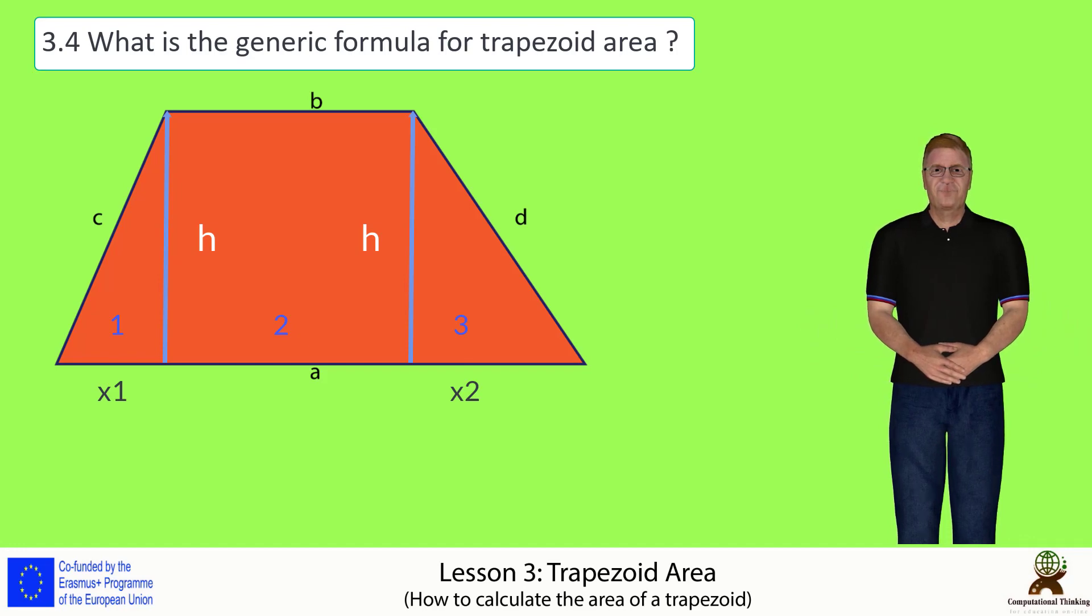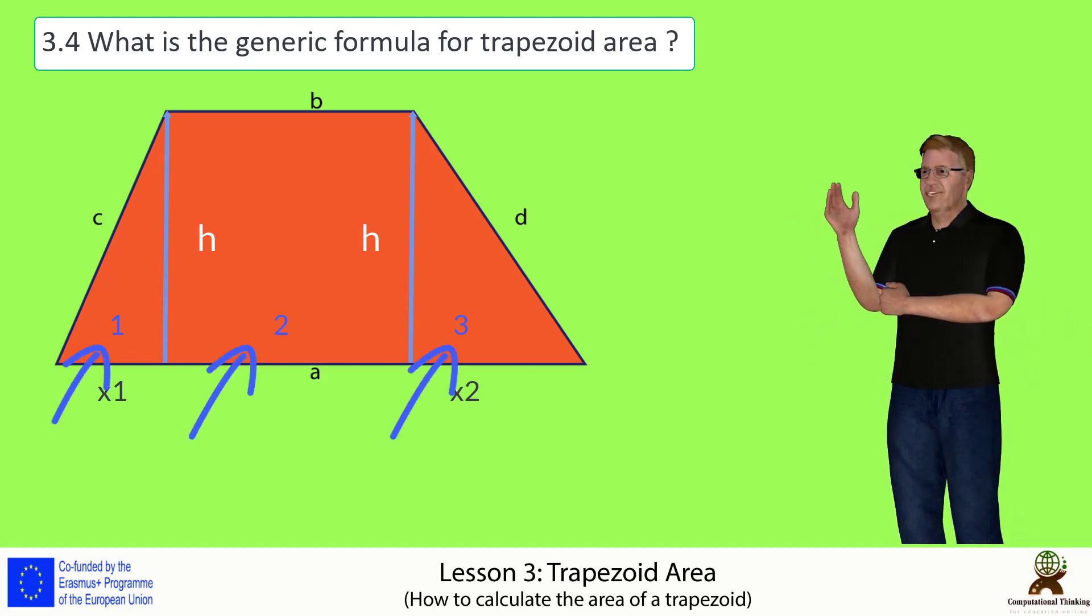Let's continue with some mathematics. The trapezoid's area is the summation of the three separate areas, as we explained before.